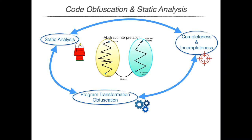The abstract interpretation framework has been used to formalize the effects that program transformations such as code obfuscation have on the precision of static analysis in terms of completeness and incompleteness of the analysis. By now, it is clear that the key idea for confusing static analysis is to induce incompleteness in the analysis by adding false positives.